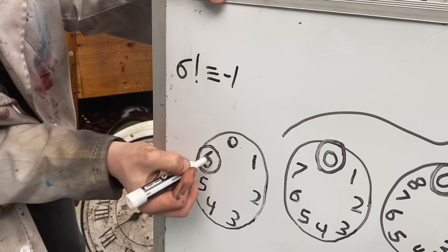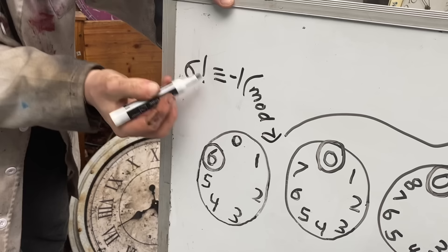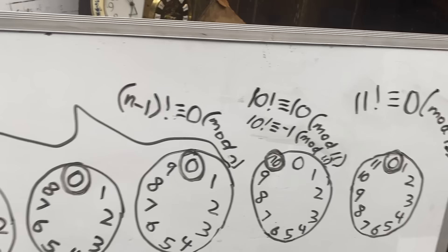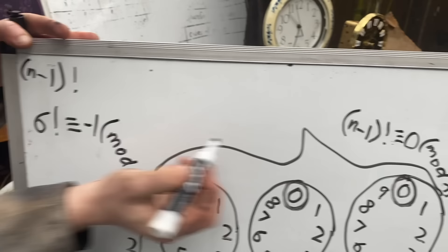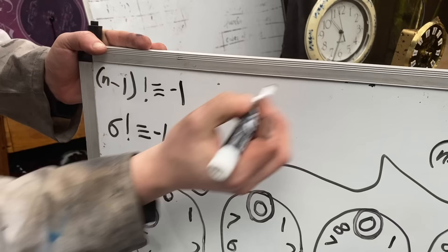And so calling it congruent to negative 1 in that mod will be useful, because that makes it more similar to this other prime example where we found that 6 factorial was congruent to negative 1 in mod 7. We could also write both of those cases as that n minus 1 factorial way similar to that, but in this case they were congruent to negative 1 in mod n as opposed to congruent to zero.